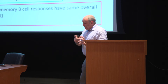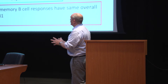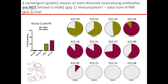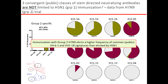In the group 2 immunogen trial, we found that the kinetics of the B cell response were exactly the same as in the group 1 trial. We even found that the same antibodies — VH6-1 and VH1-18 — were present in individuals vaccinated with group 2 (H7N9), not just group 1. So immunization with the group 2 H7N9 elicits a high frequency of the common or public VH6-1 and VH1-18 signatures.